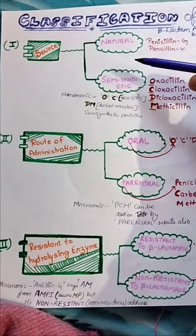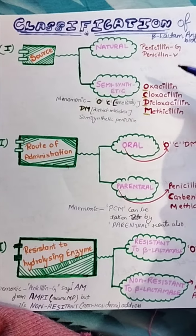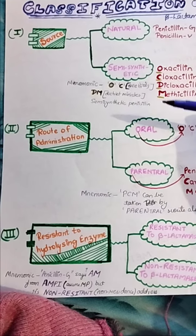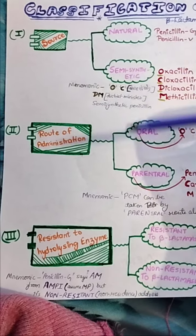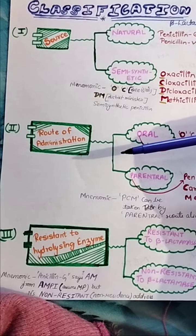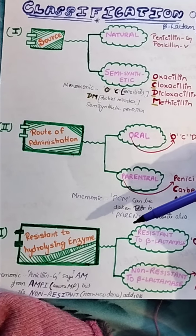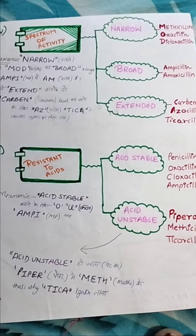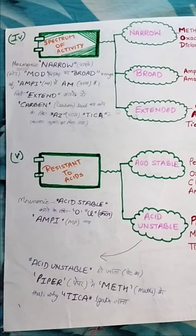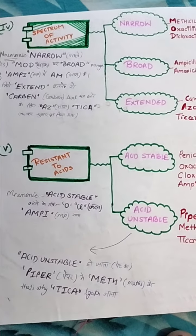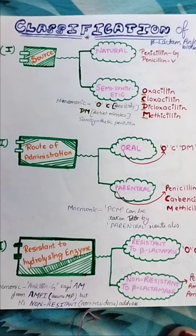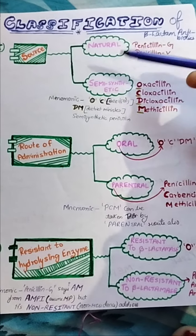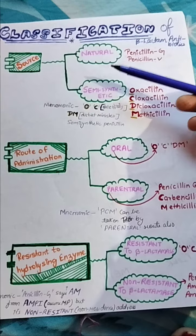Today we talk about the classification of beta-lactam antibiotics, which has six categories: source, route of administration, resistance to hydrolyzing enzyme, spectrum of activity, and resistance to acid. First of all, we talk about the sources through which penicillin are obtained.